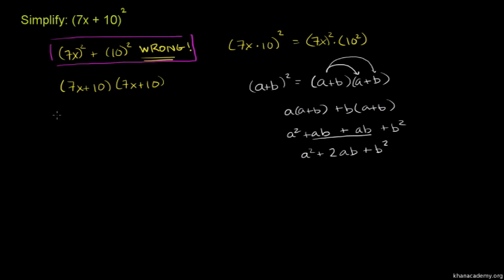This equals 7x squared plus 2 times 7x times 10, plus 10 squared. These are the terms we need to simplify. These terms can be multiplied and combined.